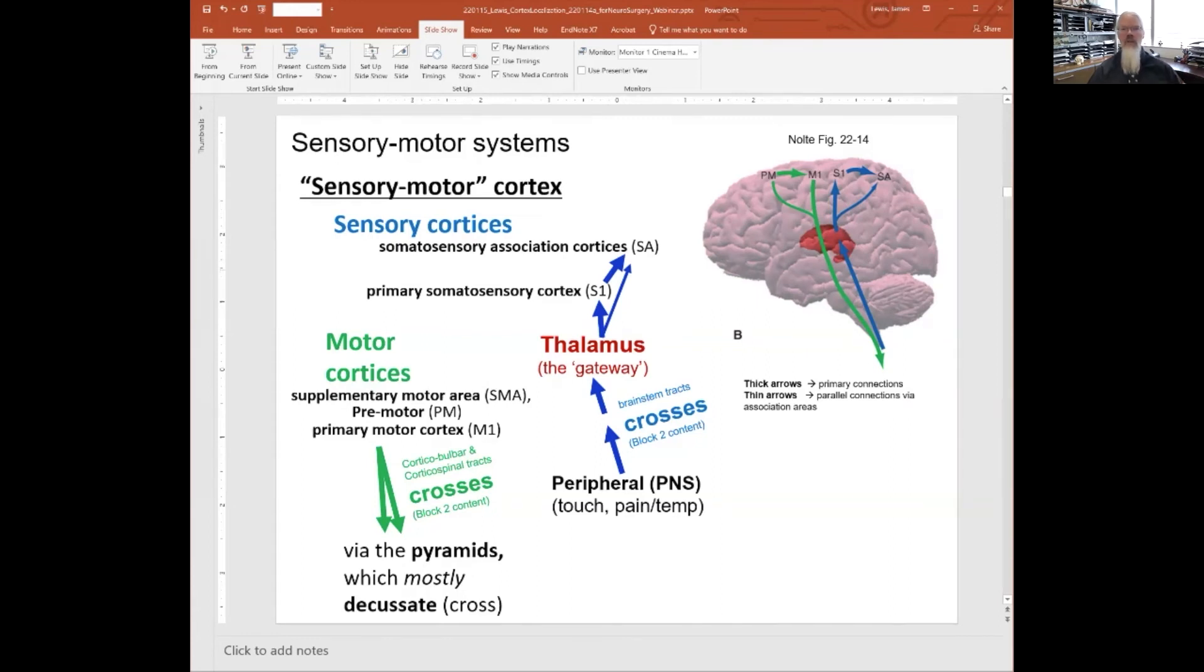Similarly, with motor cortices coming back down, you have your primary motor cortex, pre-motor, and supplementary motor areas working together as a trifecta of regions that send information to wiggle your toe. You have these corticobulbar and corticospinal tracts that then cross at the pyramids and decussate.